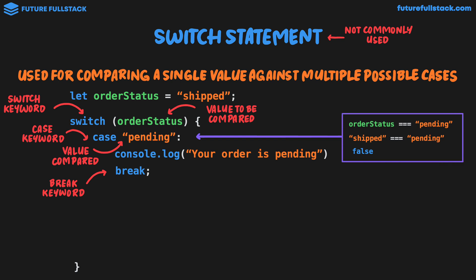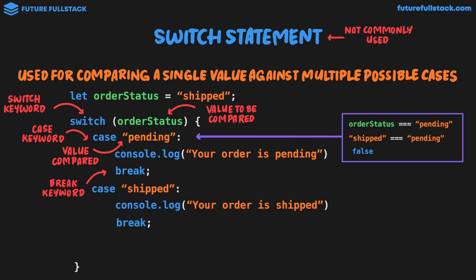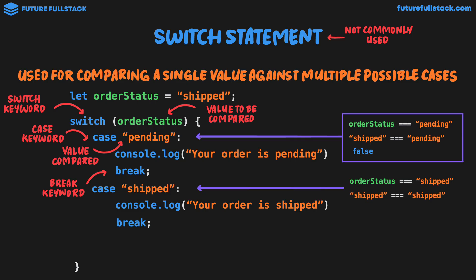We then move on to our next case where we look at case shipped and we'll output to the console your order is shipped. Once again we need the break keyword to stop the switch statement if this case is true. Looking at the logic, we now have orderStatus strictly equal to shipped. The value stored in order status in our example is shipped. So we have shipped strictly equal to shipped, which is true. So this code block would run and we would get outputted to the console your order is shipped.